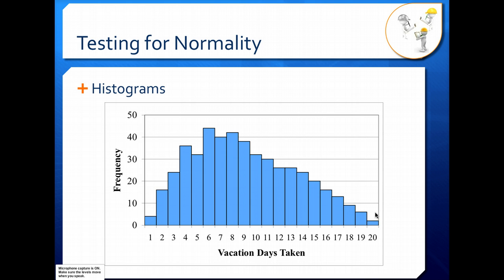When you're looking at histograms and checking the shape, you want to make sure that you're looking for long tails. You also want to check to see if your data are symmetrical — if they're symmetrical, it's more likely to be normally distributed. You also want to make sure that you don't have several peaks, which is called bimodal or multimodal data. You want unimodal data in your histogram. In this case, you have one main peak, but you have a tail, and that tail results in a non-symmetrical data set.